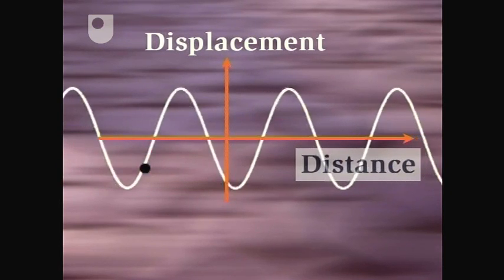Let's forget about the distance axis and consider the periodic up and down motion of this point on its own. In order to see how the displacement of this spot varies with time, we can plot a graph of displacement against time.